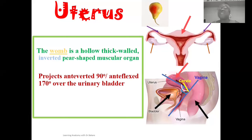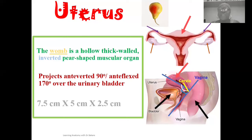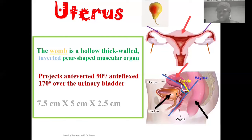Let's now look at the dimensions of the uterus. Along its vertical axis, the uterus has a length of about 7.5 cm. Transversely it is about 5 cm, and the thickness of the uterus is about 2.5 cm. These are the general dimensions of the uterus, and it's good to know these in case they come up in examination.